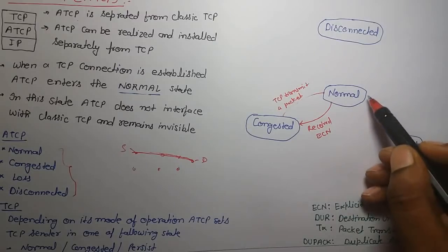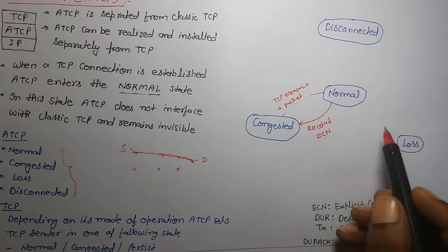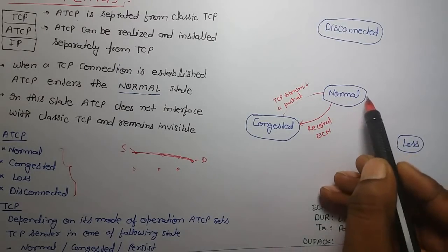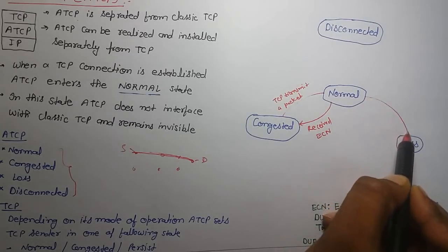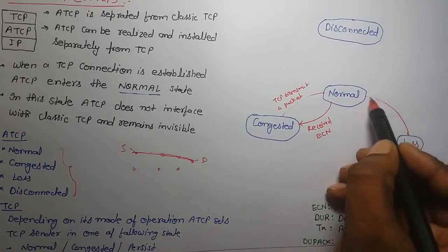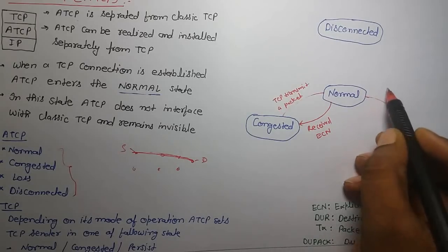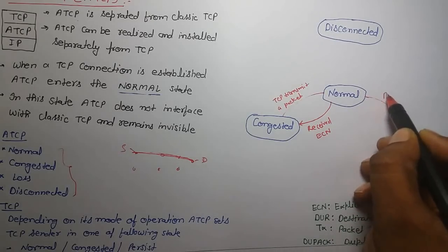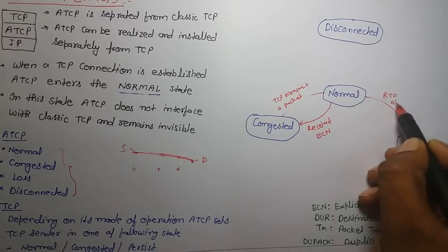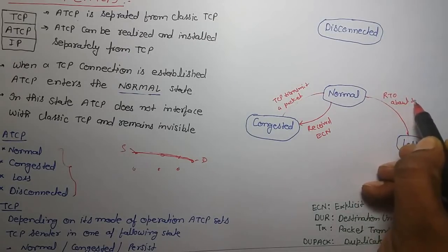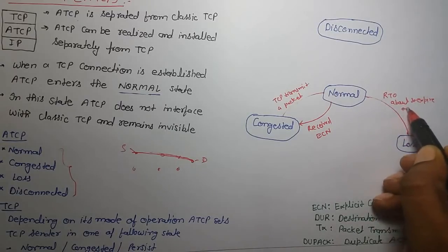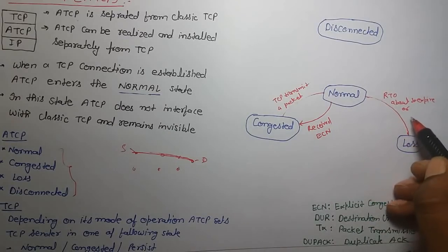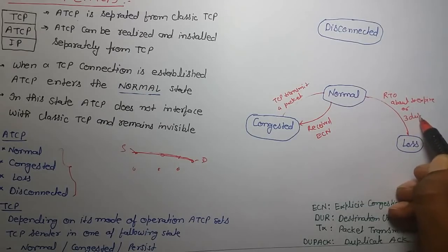When it is in normal state and RTO is about to expire, and 3 duplicate acknowledgements are received, then it will move to loss state. So RTO about to expire and receiving 3 duplicate acknowledgements triggers the transition to loss state.